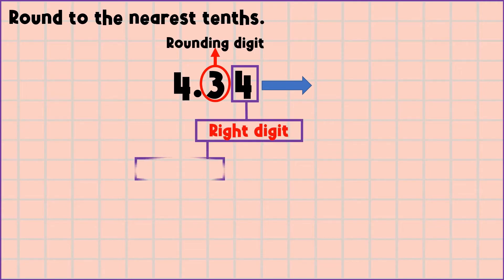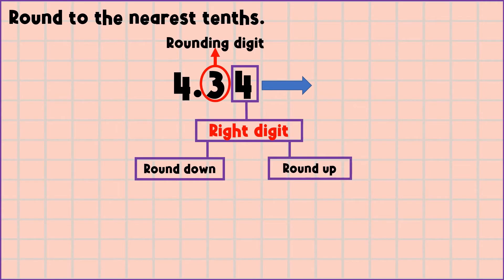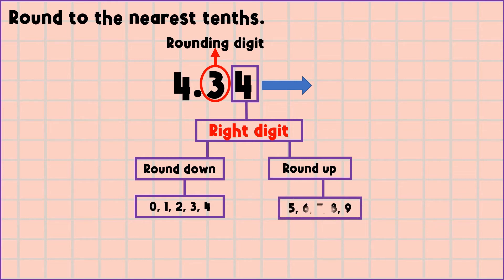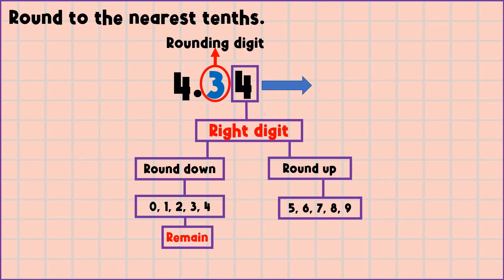Let's evaluate 4 — is it a round down or round up digit? Round down digits are 0, 1, 2, 3, and 4. Round up digits are 5, 6, 7, 8, and 9. If the digit to the right of the rounding place is a round down digit, then the rounding digit will be remained. But if the digit to the right of the rounding place is a round up digit, then the rounding digit will be added by 1.